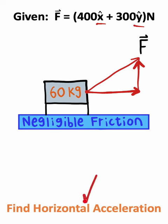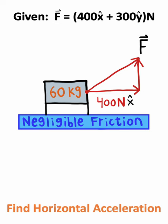Since we're trying to calculate horizontal acceleration, I'll focus on the horizontal component of force which is 400 Newtons.